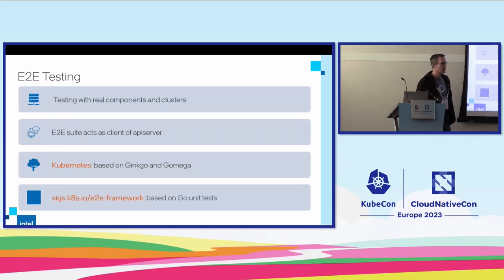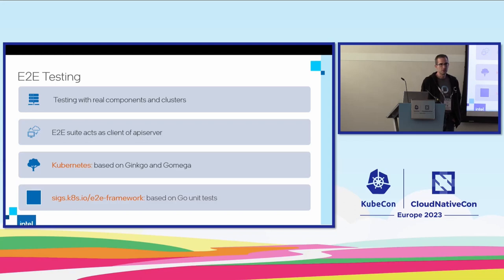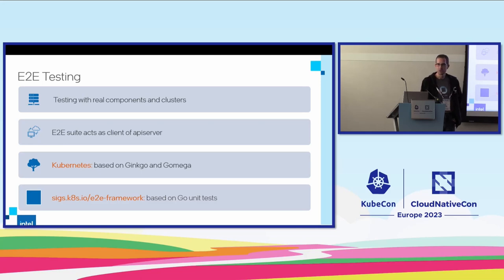End-to-end testing — the definition first. It is about testing with real components in real clusters, perhaps on VMs, perhaps on real hardware. It really deploys a full cluster. In many cases in Kubernetes it's a kind cluster, but it uses the same artifacts that get published by Kubernetes. It's not some special API server — it is the API server that is getting tested, along with all the other components like kubelet.